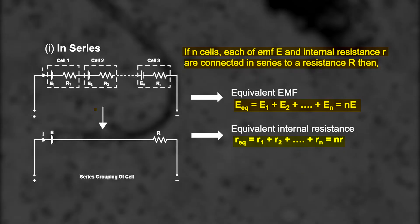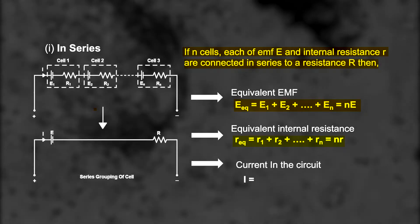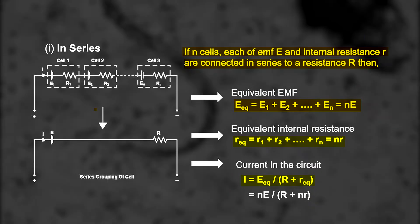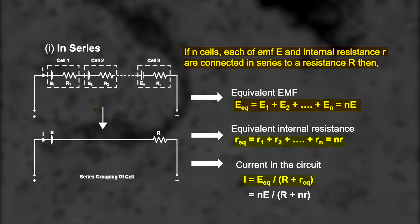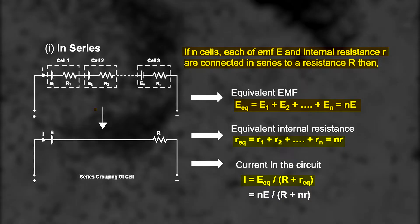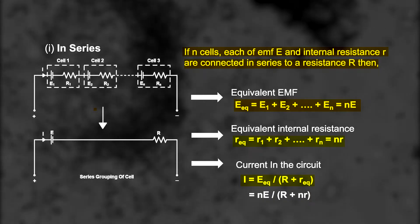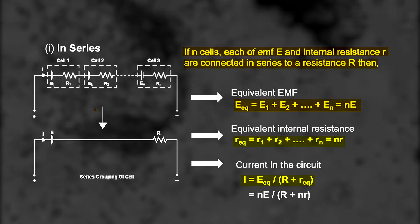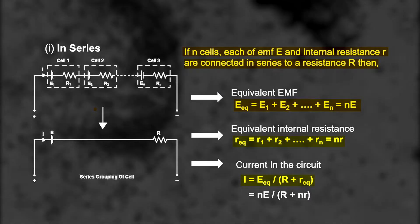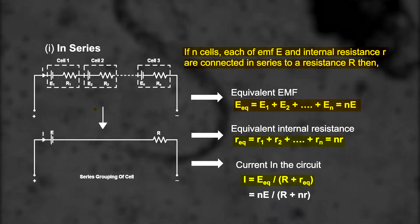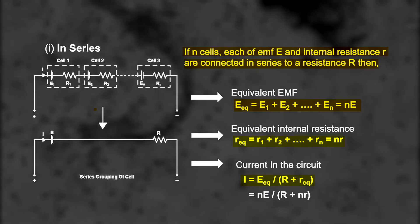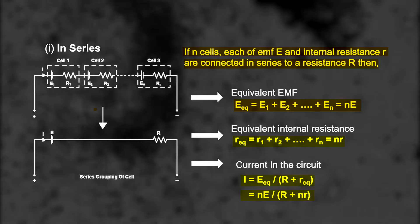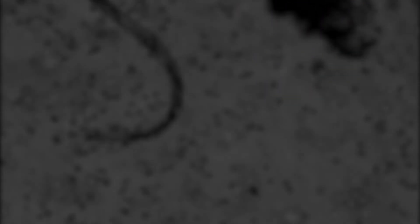From Ohm's law, we get the formula for the total current in the circuit. I_eq = E_eq divided by the total resistance. The total resistance is R plus R_equivalent, so we can write: I = E divided by (R + nr), when the cells are connected in series.